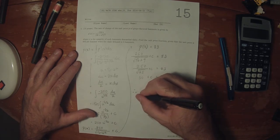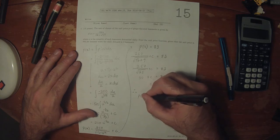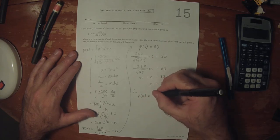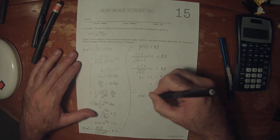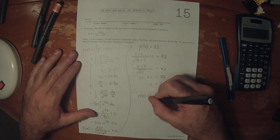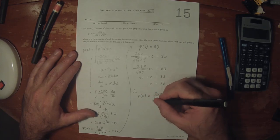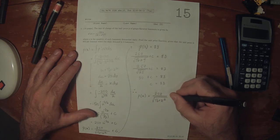Therefore the unit price function is p of x equals 250 divided by square root of 16 plus x squared, plus 33.